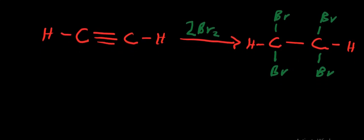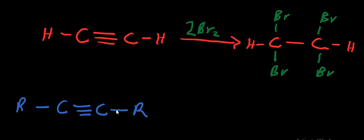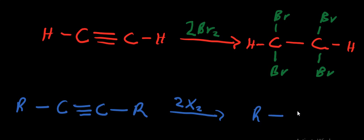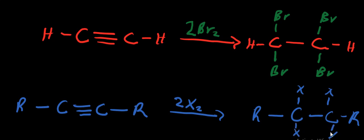The general formula for addition of halogens to an alkyne is: R-C≡C-R reacted with 2X2 gives R-CX2-CX2-R, where four halogen atoms X are added across the triple bond, two on each carbon.